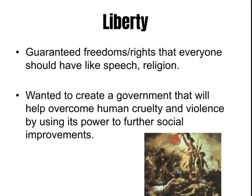Enlightenment thinkers believed that one way to make people happy and allow progress is by guaranteeing their freedoms, often called natural rights — things people were born with, like freedom of religion, freedom of speech, and freedom of the press. Many of these are contained in the First Amendment to the Constitution and in our Declaration of Rights. They wanted a government free from cruelty and violence that made progress.